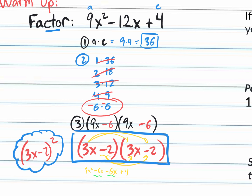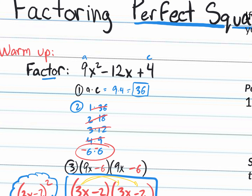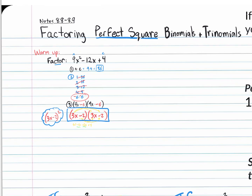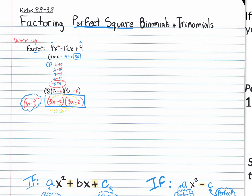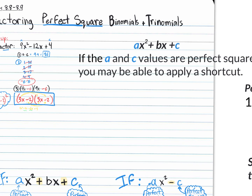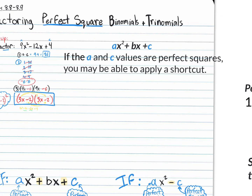Today we're learning a new factoring method — an additional tool in our factoring toolbox. This new method is factoring perfect square quadratic trinomials and binomials. What is a perfect square? When you have a standard form quadratic trinomial, if the a value and the c value are both perfect squares, you may be able to apply a shortcut. Don't copy this down yet — just listen and understand first.